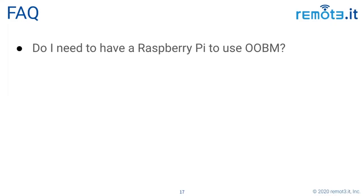Do I need to have a Raspberry Pi to use out-of-band management? The answer is definitely no. We've made it easy to use a Pi, but you can use a Windows machine, a Mac, or anything that will run Remote.it. The issue is you have to be able to configure that device so that its wired Ethernet will be LAN-only and its Wi-Fi will look for the internet.